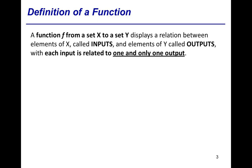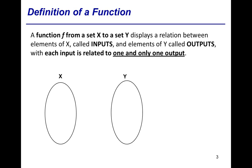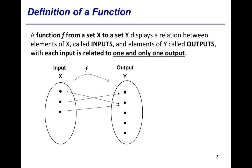In pictorial form, if X and Y are finite sets, we can define a function f from input X to output Y by listing out the elements in X and the elements in Y, and then drawing an arrow from each element in X to correspond to some element in Y. This is called the arrow diagram.